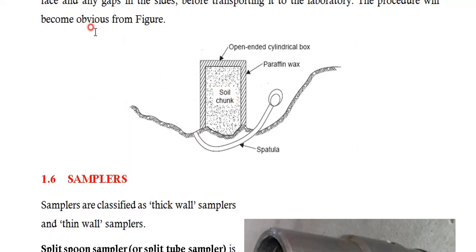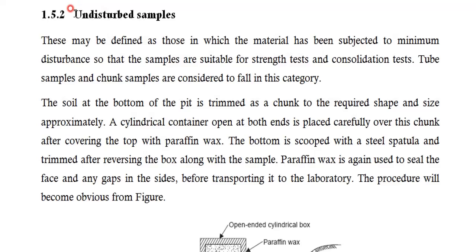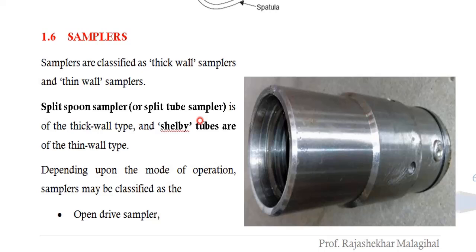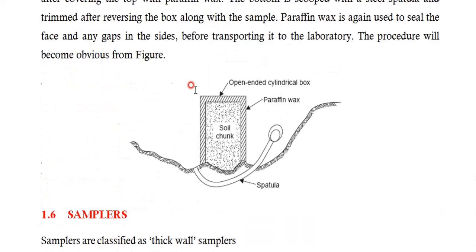Such samples are called undisturbed soil samples, but actually we don't have 100% undisturbed soil samples, because in one way or another you will disturb the soil when you bring it to the lab. Samplers are instruments used to collect the soil sample. The core cutter is an example of a sampler, and the soil inside it is the sample.